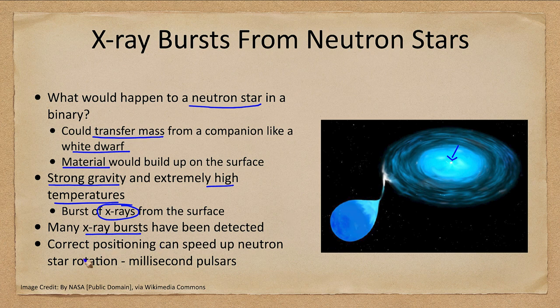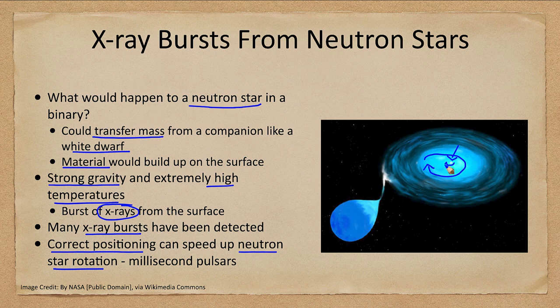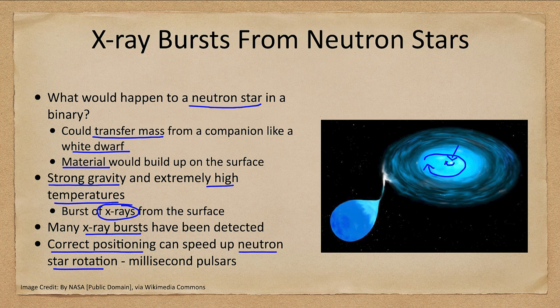Depending on the position of accretion, you can also use this to speed up neutron star rotation. If the material is spiraling in one direction and the neutron star is rotating in that same direction, you're giving it a little kick each time material hits it — like pushing a child on a swing, you push them when they're going in the right direction and you can accelerate them. This can accelerate pulsars to millisecond pulsars, where they can be spinning 100 times a second, up to almost the limit — even a neutron star has a limit to how fast it can spin before it would rip itself apart.